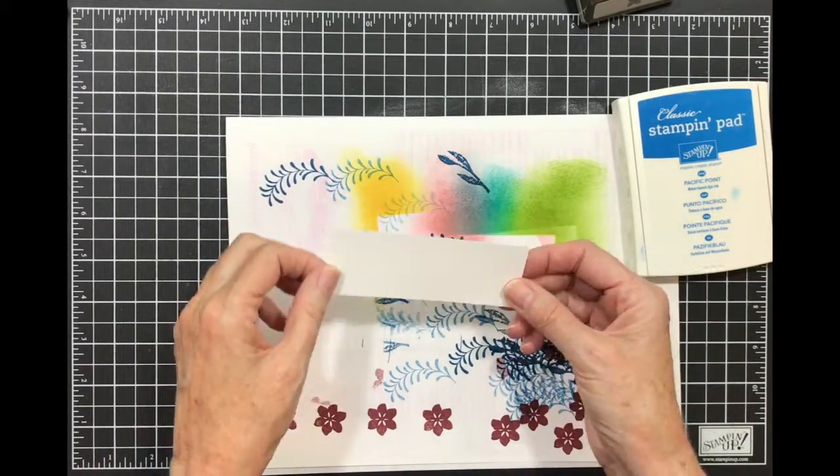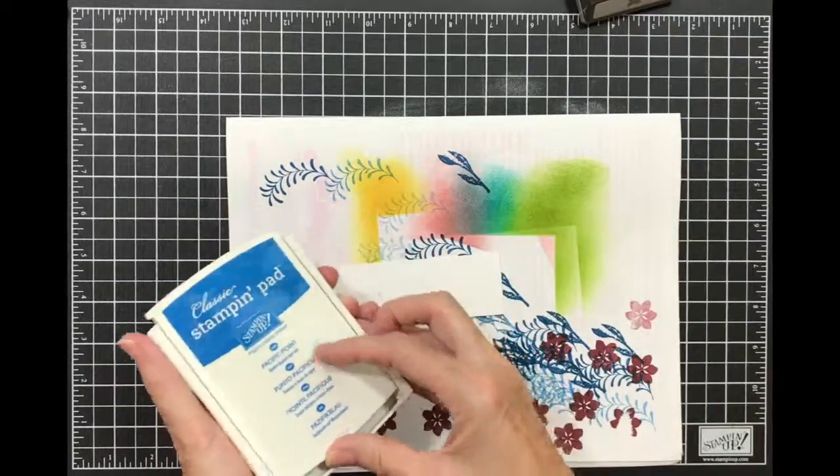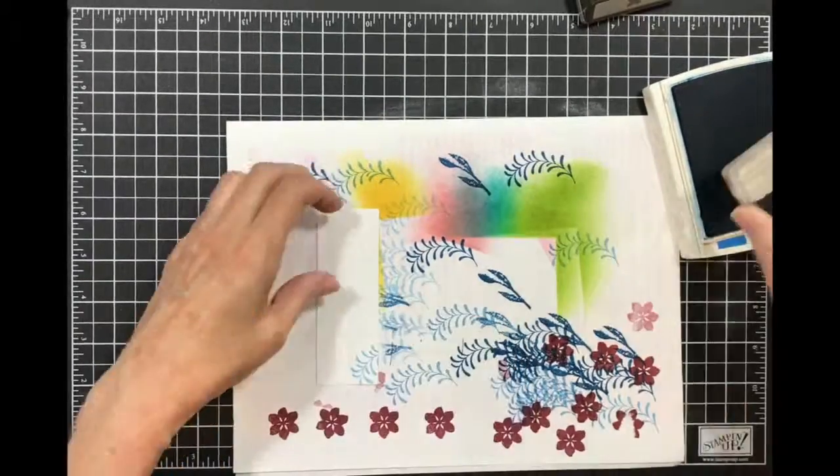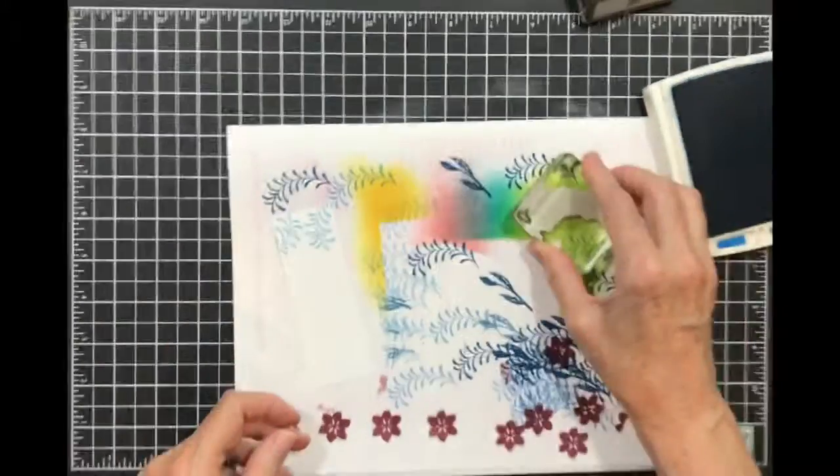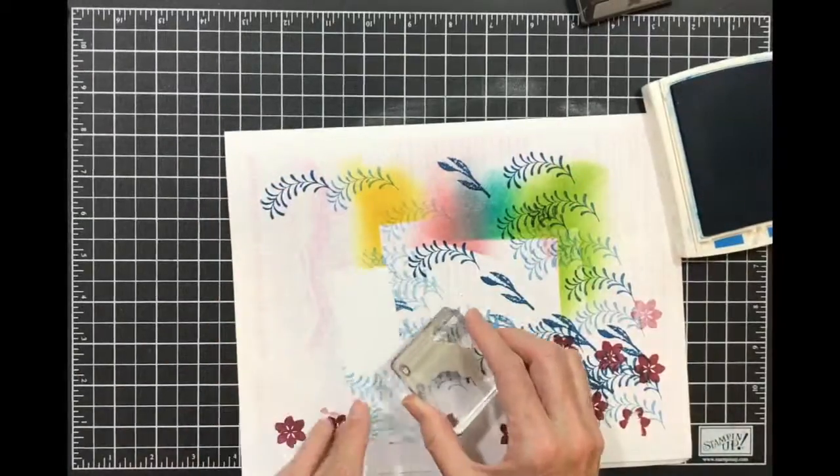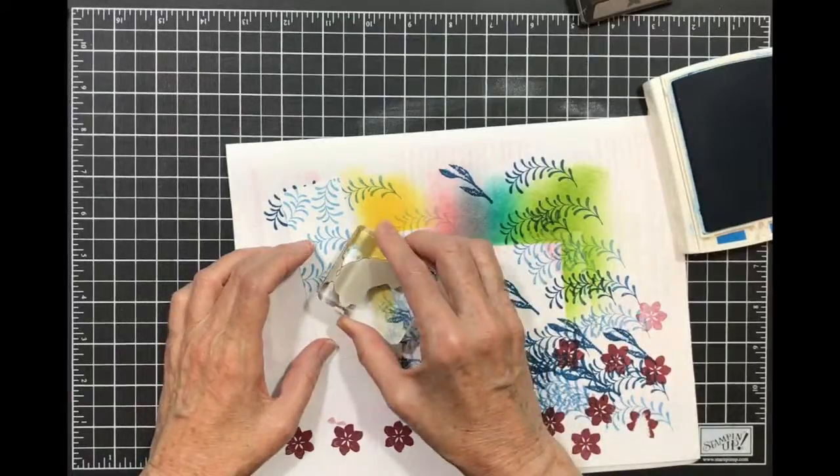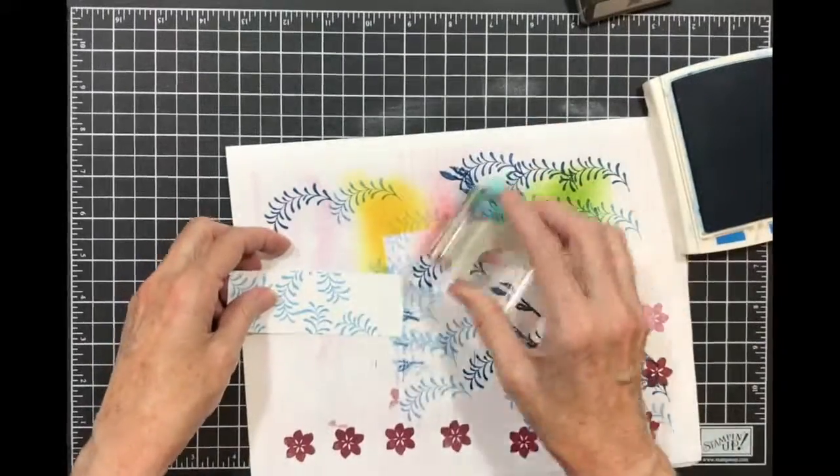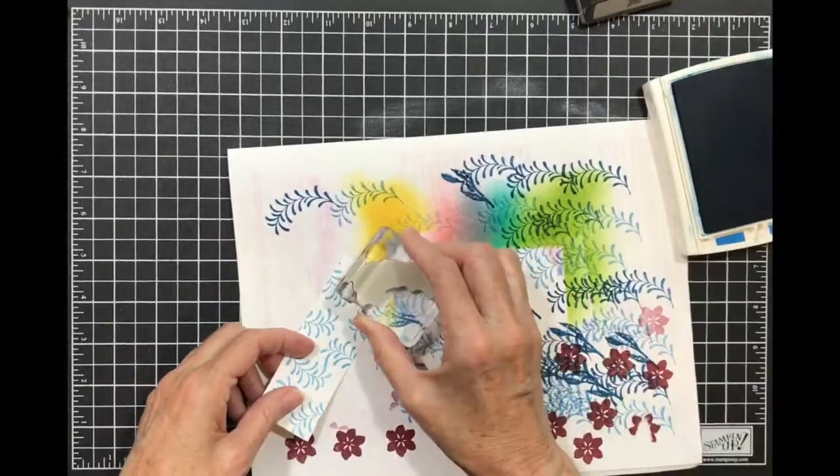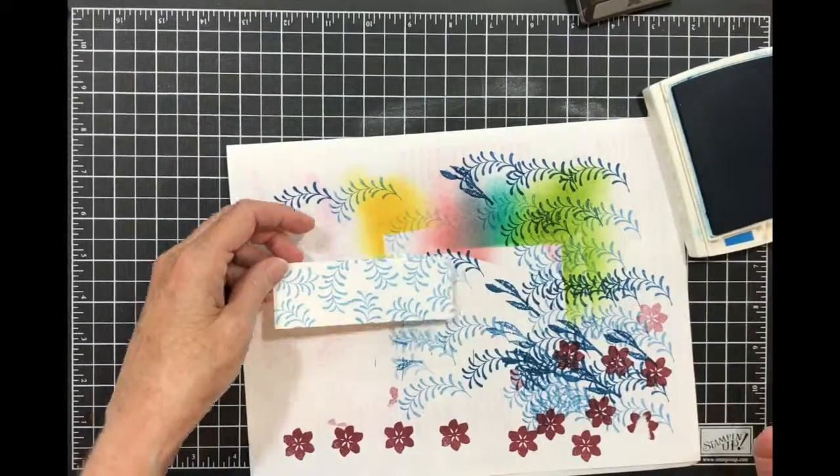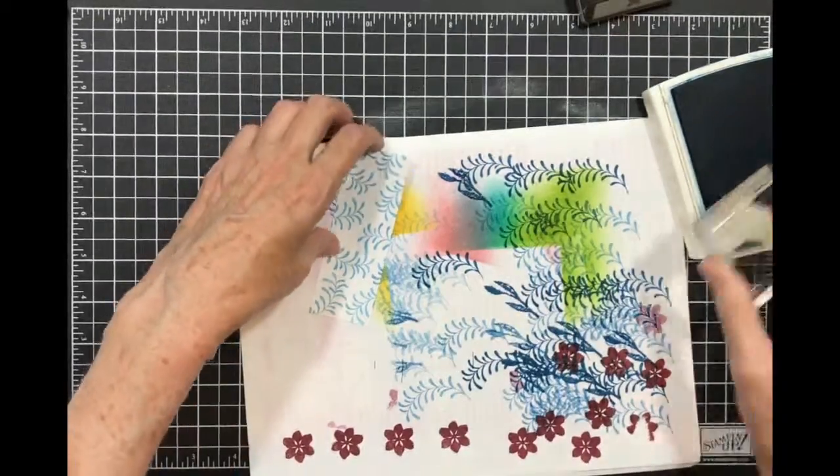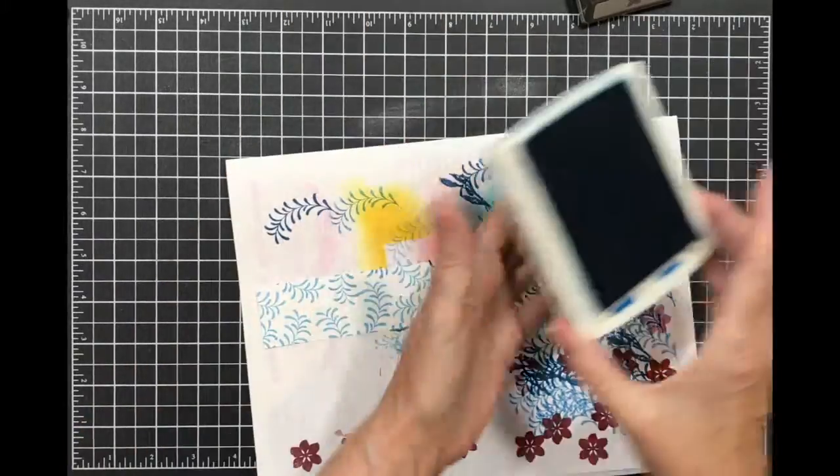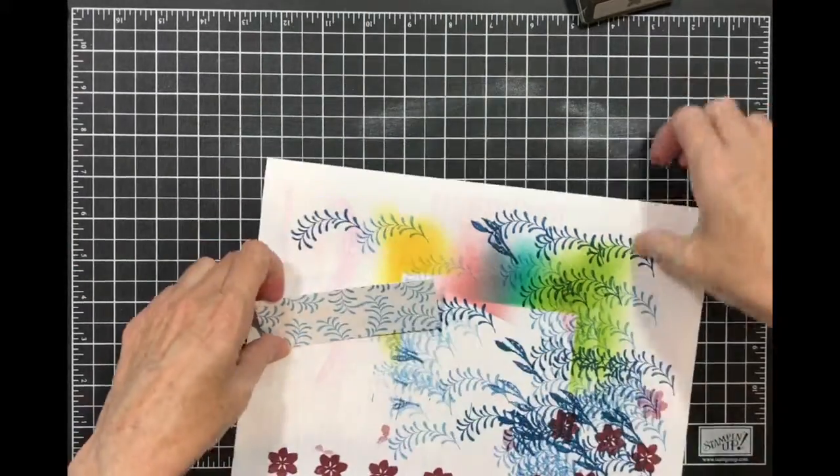Now I'm going to take my strip, the one and a half inch strip, and I'm going to use this one and third generation stamping and stamp all over. When you have one color you can add interest by using the stamps in your stamp set and just doing second, third, and even fourth generation stamping.